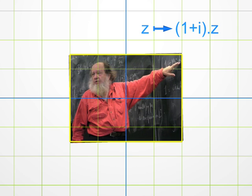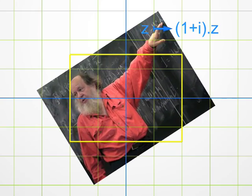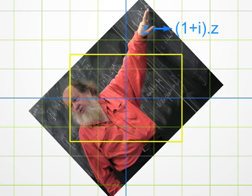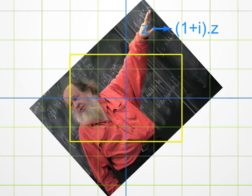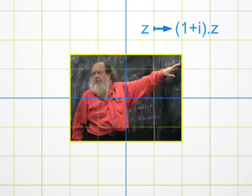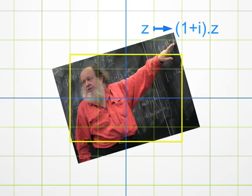Hence, multiplication by 1 plus i amounts to first multiplying its modulus by the square root of 2, and then adding 45 degrees to the argument. In simple words, you have to combine a dilation and a rotation. This is called a similarity.